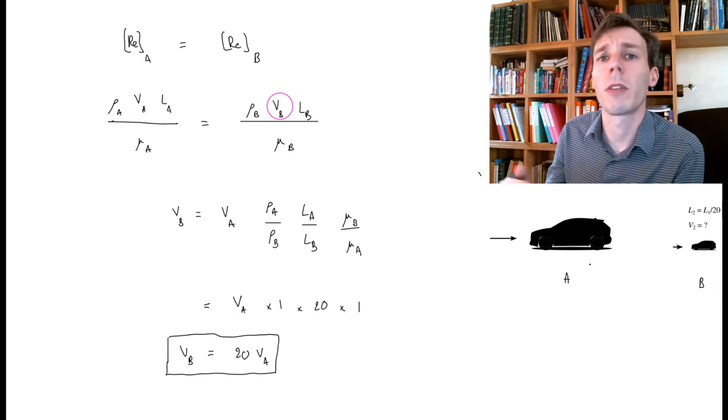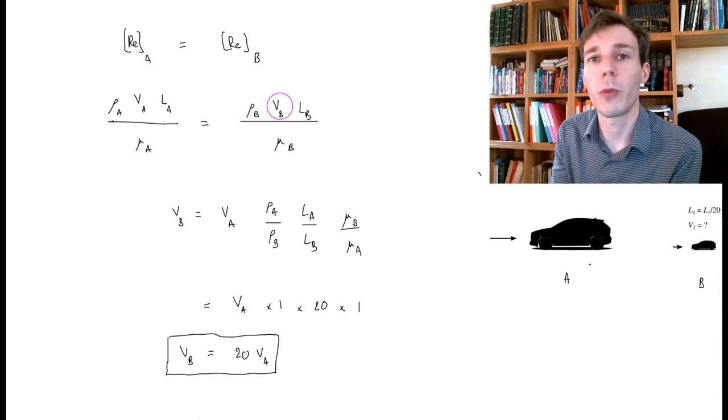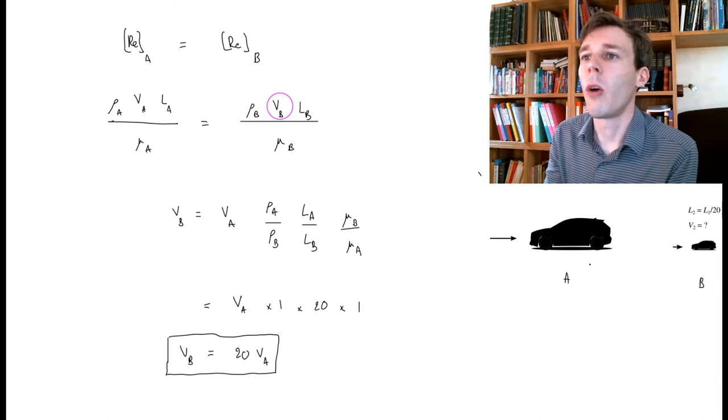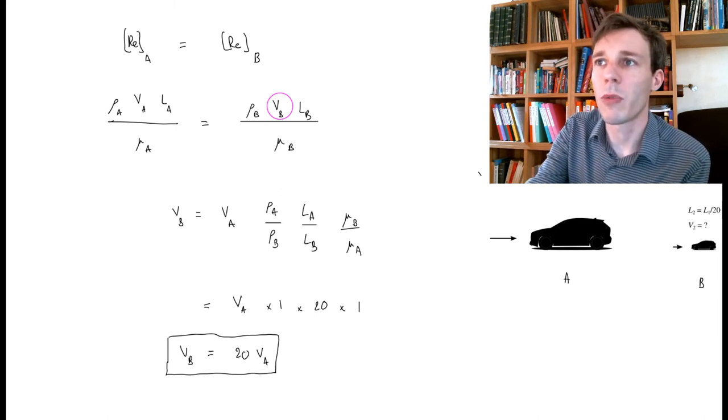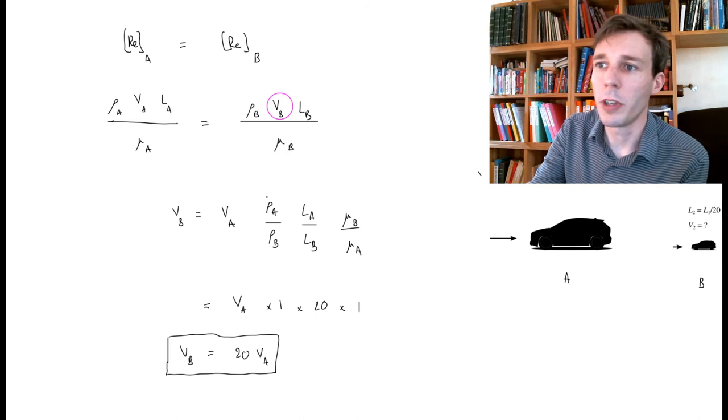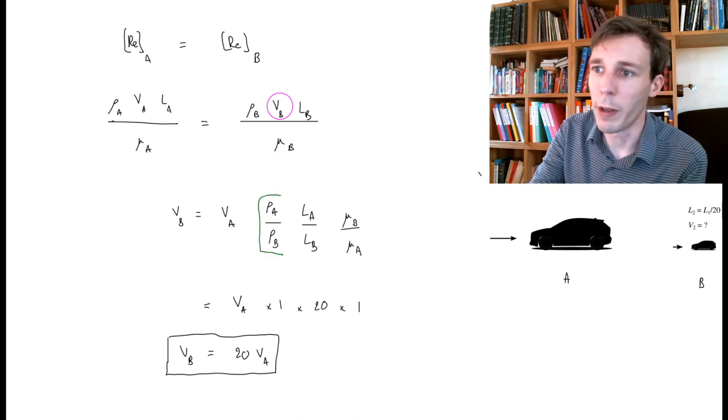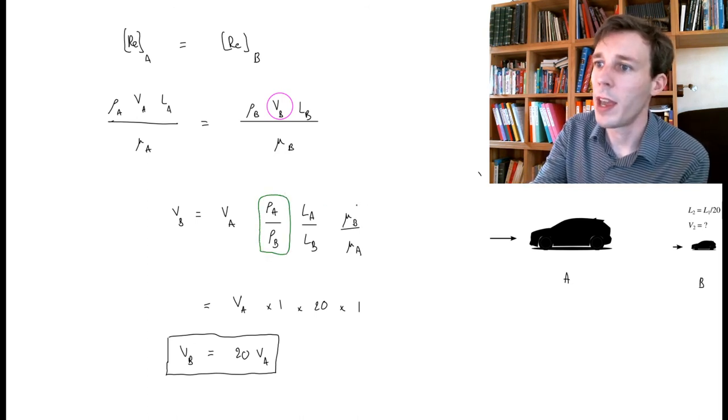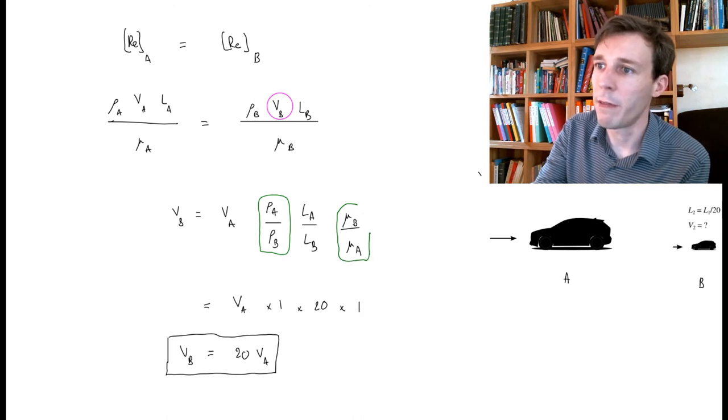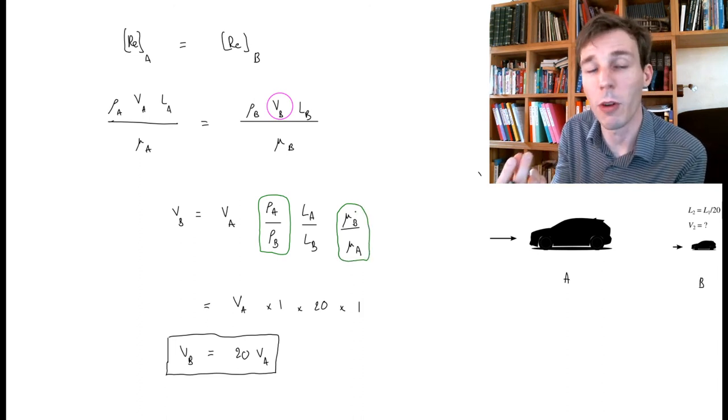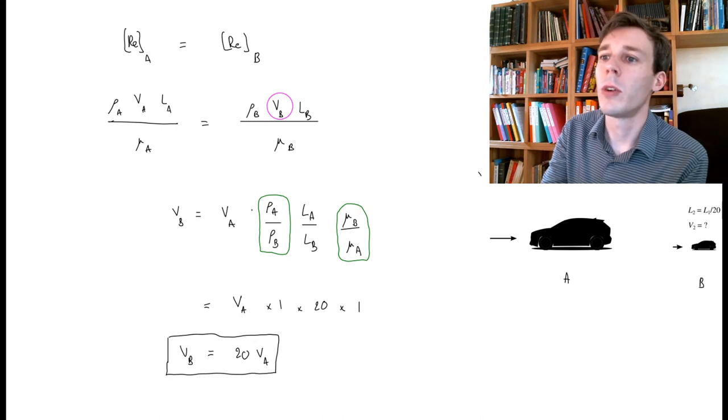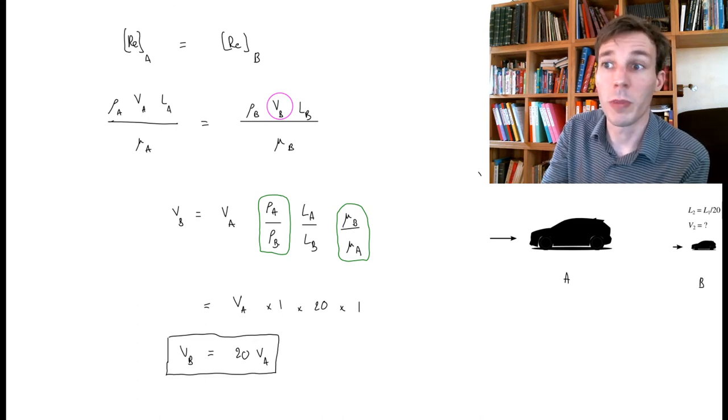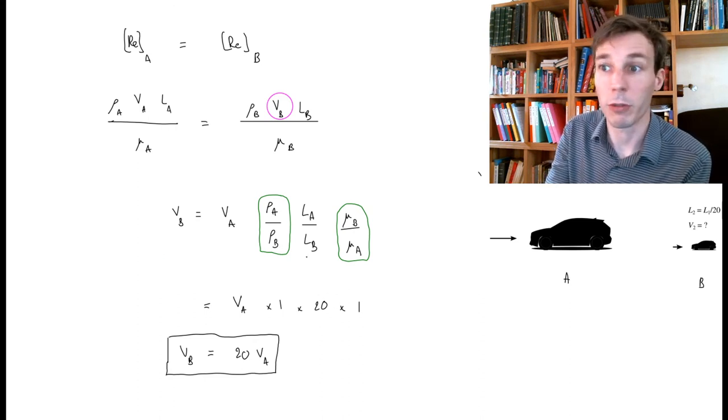So there are different ways around this problem that fluid dynamists use. One way is to use the other parameters in this equation. And so you can play a little bit with this fraction here and that fraction there if you adjust the properties of the fluid around the model car.